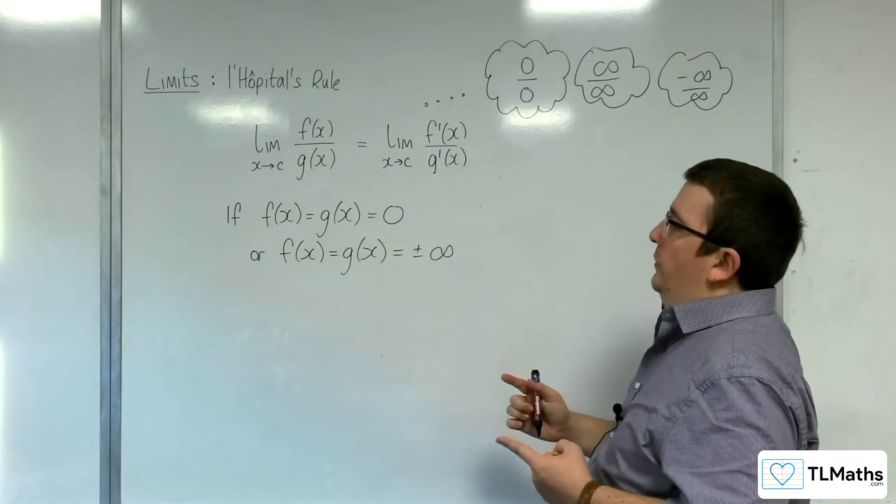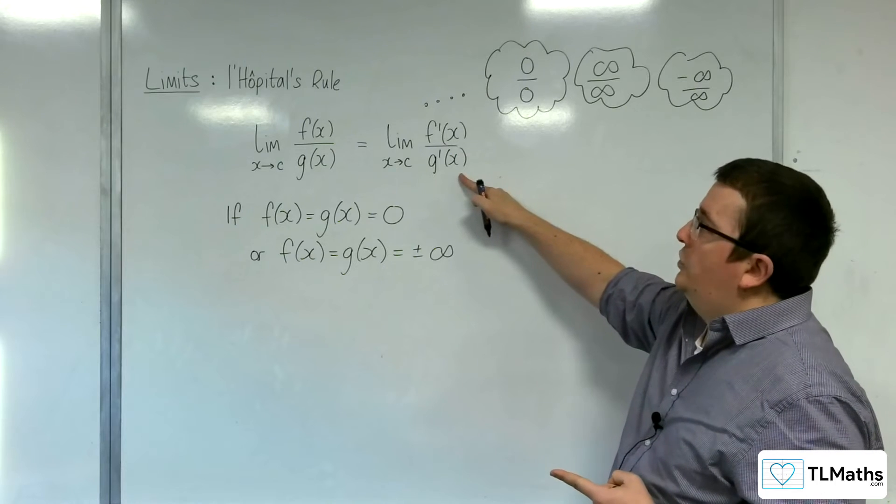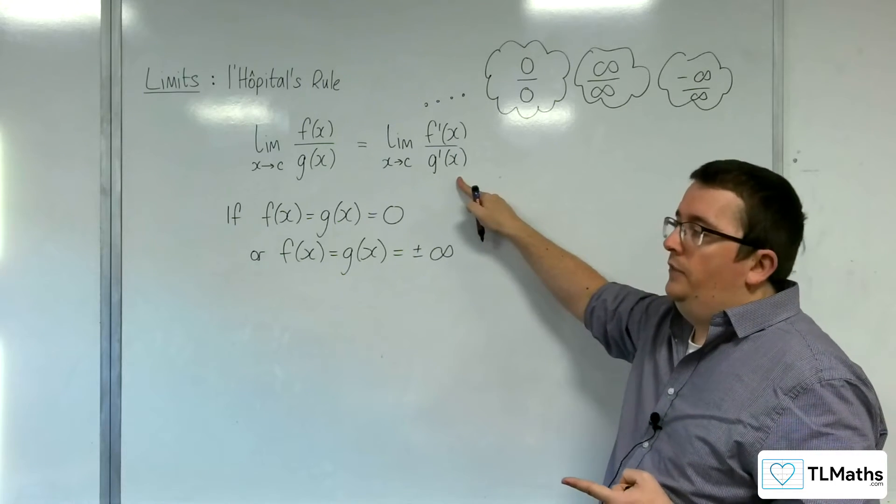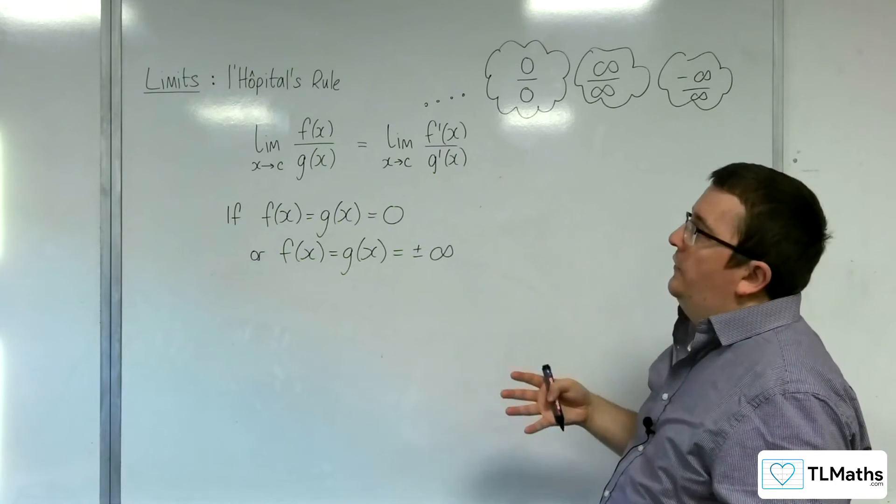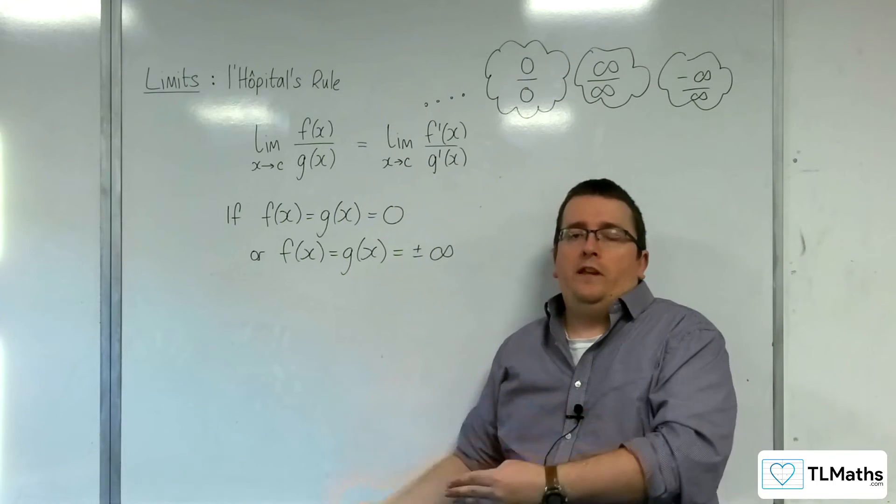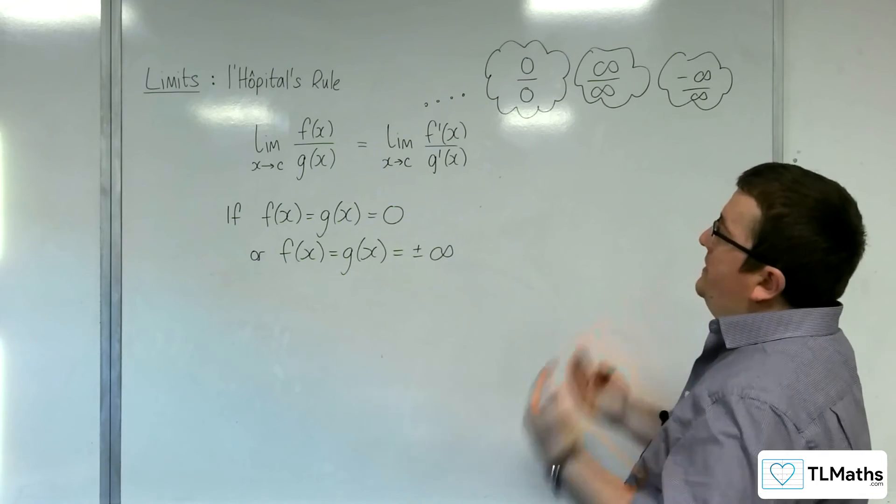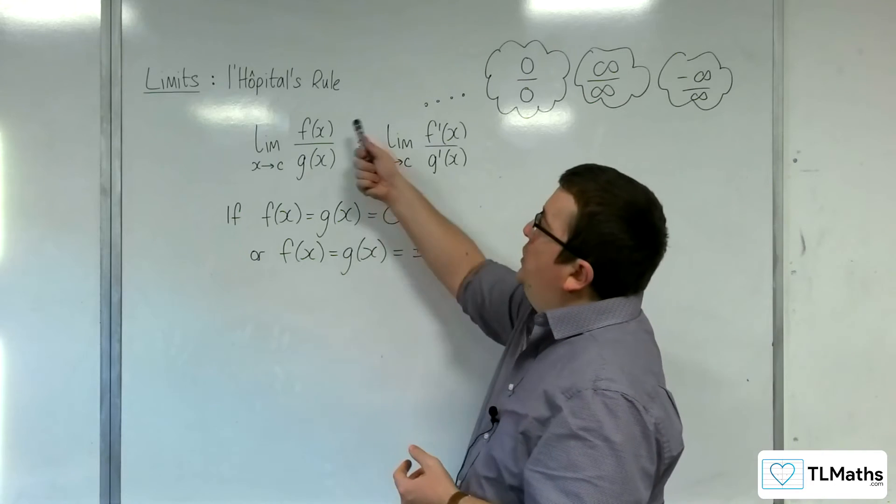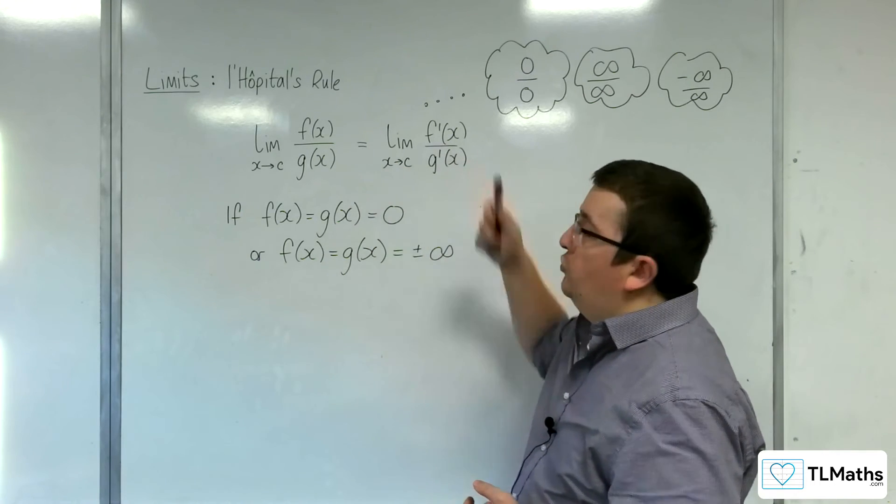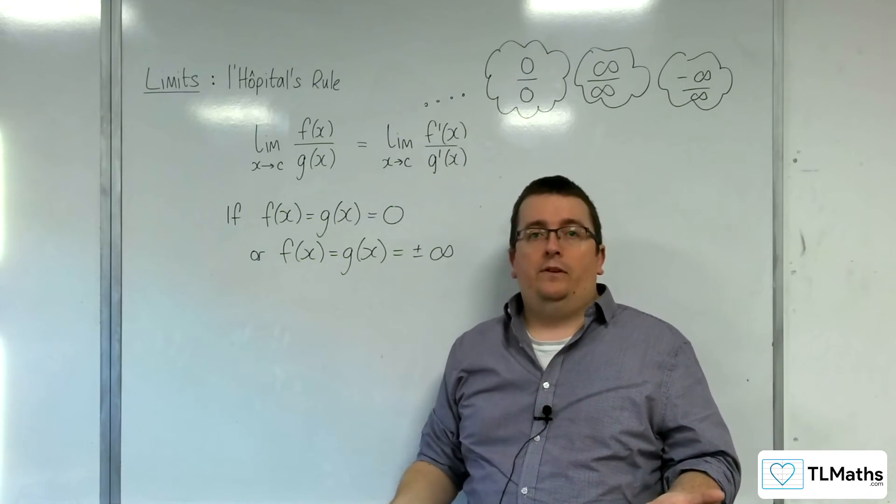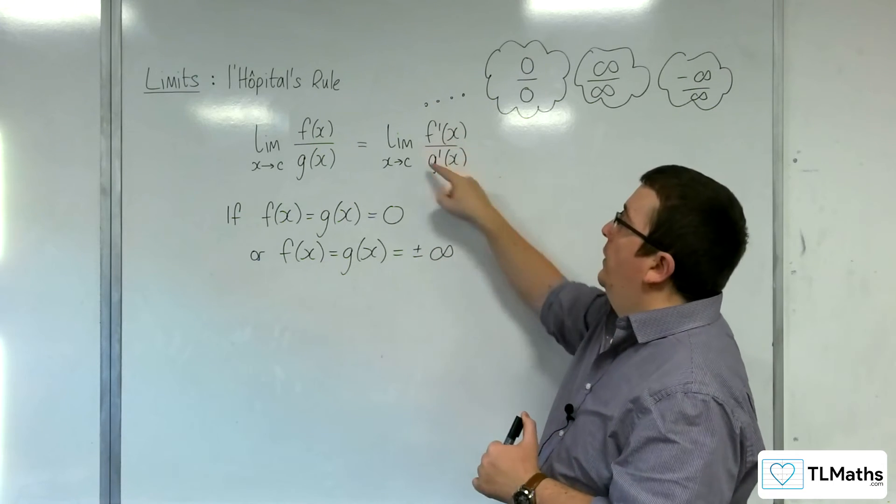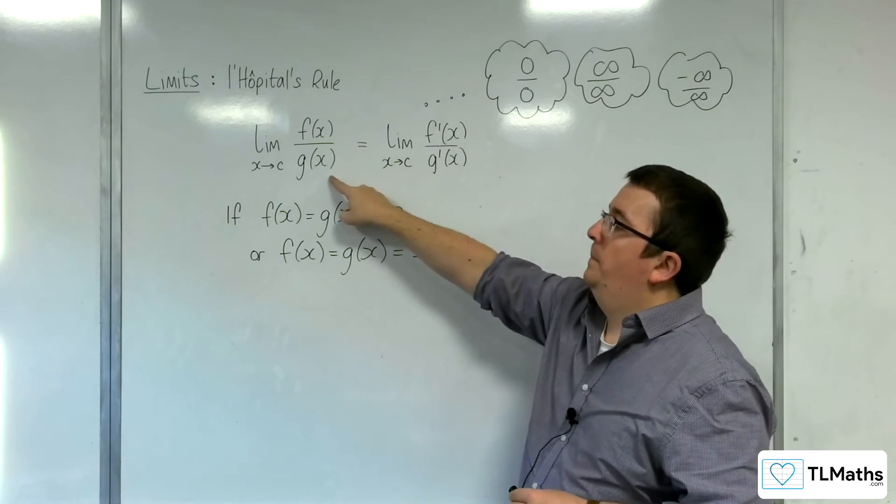Provided, of course, that this limit actually exists. So, there are a few caveats here to enable you to use L'Hopital's rule. But the idea is that if you differentiate the numerator and denominator and then try to evaluate that limit, then the limit of this will be the same as the limit of that.